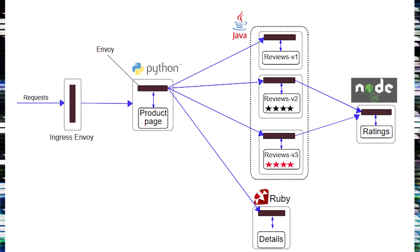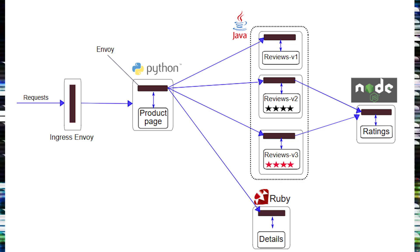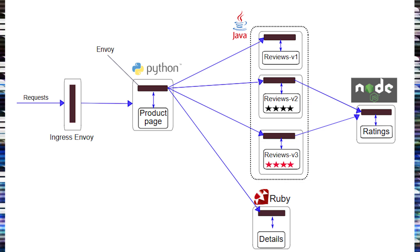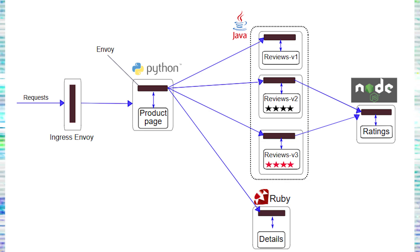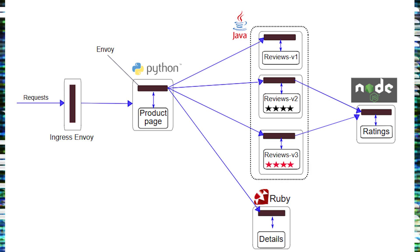This application is polyglot, meaning the microservices are written in different languages. The product page service is written in Python, reviews is based on Java, details is written in Ruby, and ratings is written in Node.js.